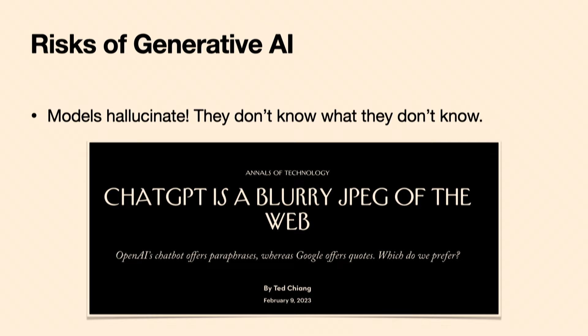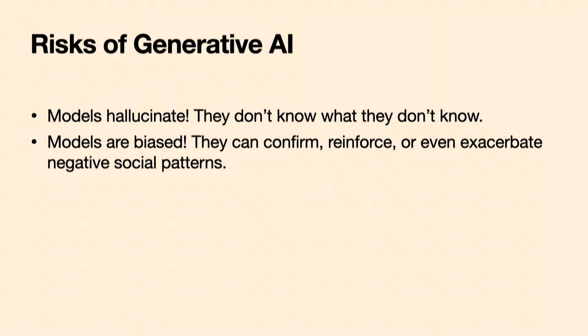An article I'd recommend from The New Yorker likens models like ChatGPT to a 'blurry JPEG of the web' — a low-resolution compressed version of all the information out there. When thinking about appropriate applications, you have to make sure you're okay with a lossy compression and a reconstruction that might not be faithful to the original. There are some cases where that's fine and some cases where it's not.